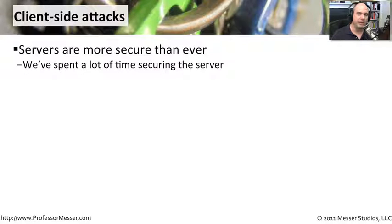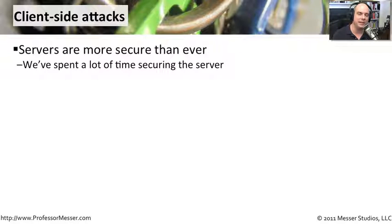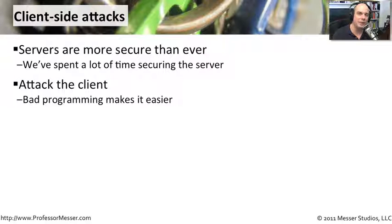The bad guys have noticed that we're putting up firewalls and hardening our servers, making it very difficult for people to go directly to the source to get the type of access they want. If a bad guy wants to get to a database, it's very hard now to go directly to that database server — we put all kinds of security methods in place to prevent direct access. So the bad guys have decided that if you're going to protect the server, they'll attack the client instead, because the client is not going to be protected from the server. Your client has to talk to the server, so that's a great attack vector.